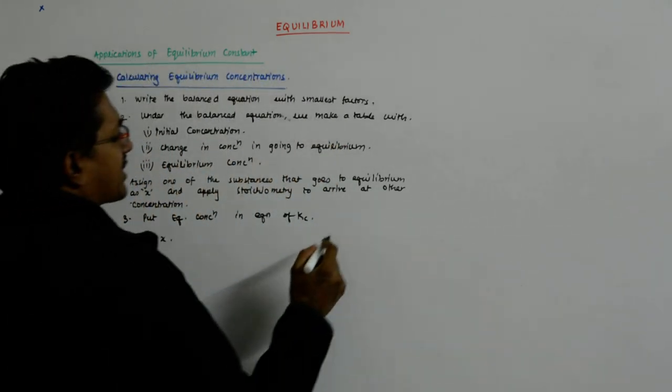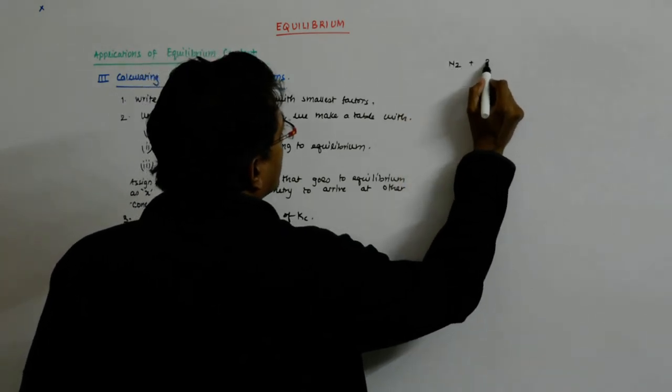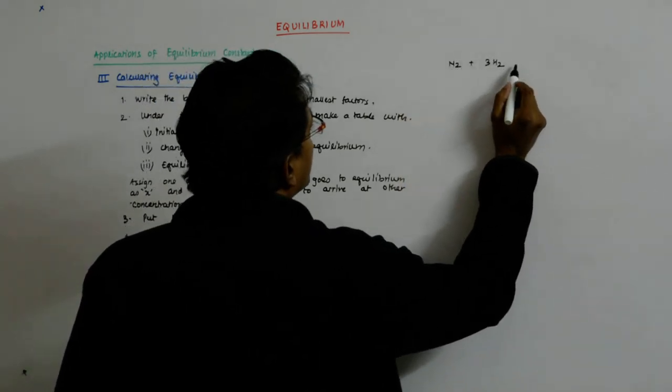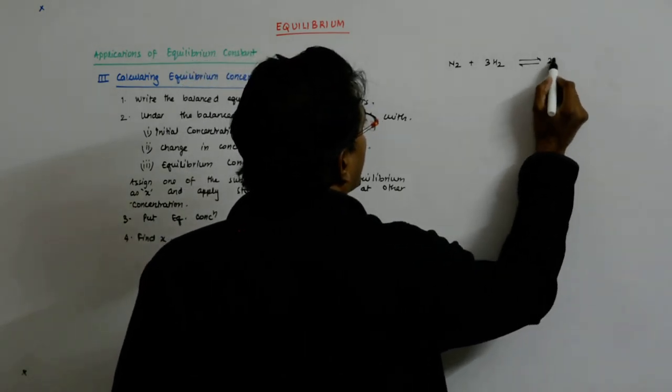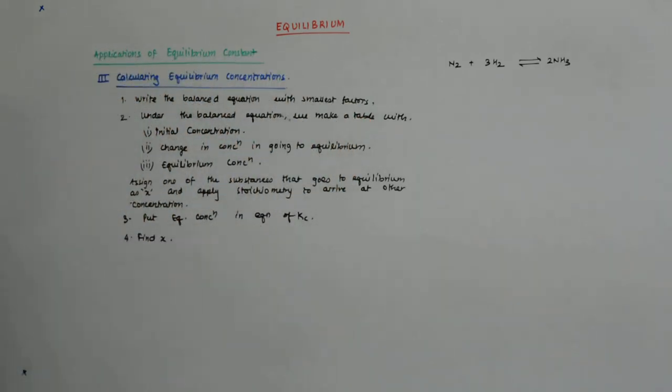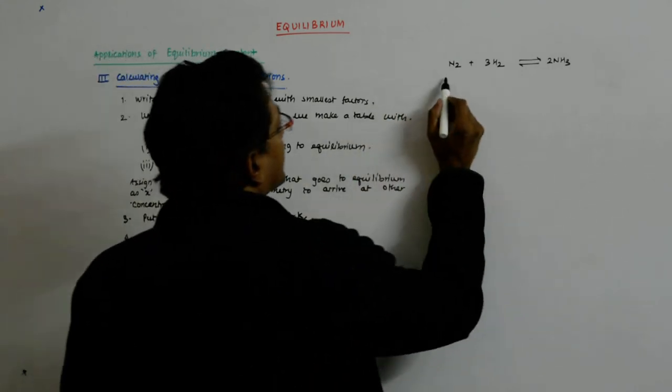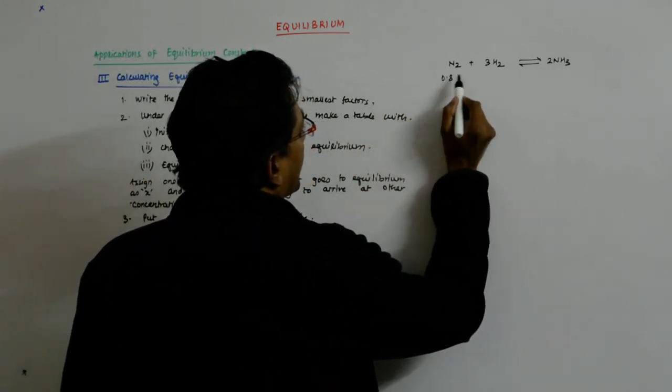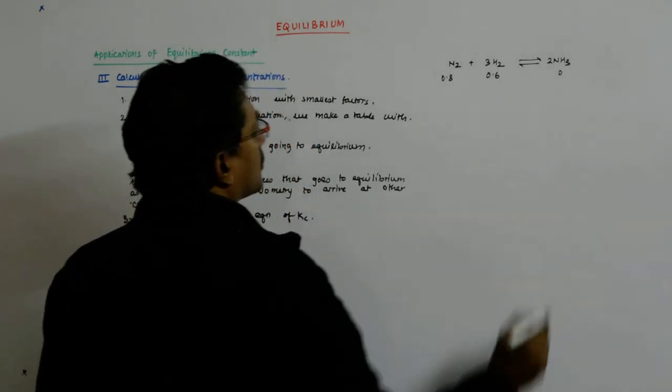So for a reaction which is something like this: N2 plus 3H2 giving you 2NH3, the famous ammonia synthesis reaction, and suppose you are given this as 0.8 and this as 0.6 and this as 0, then what do you do?